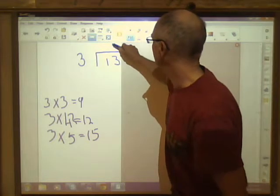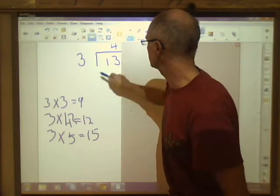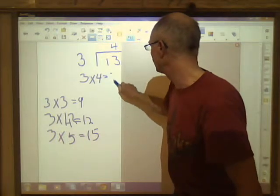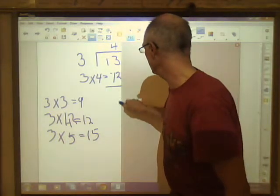So 3 goes into that four times. 4 x 3 = 12. And that gives us one remainder.